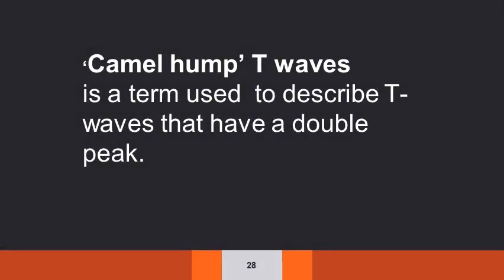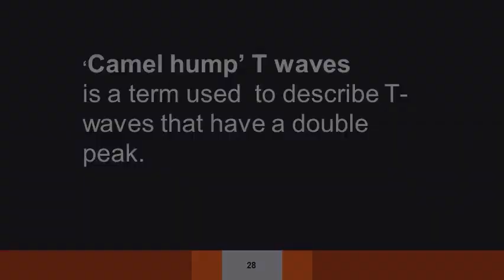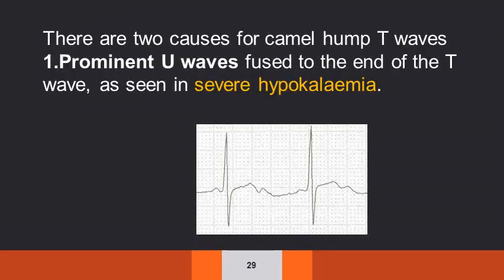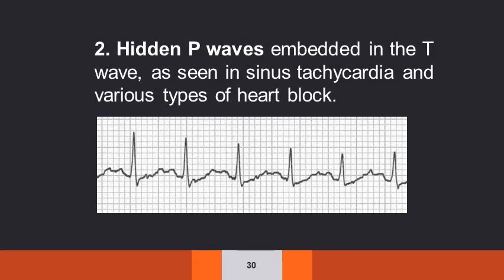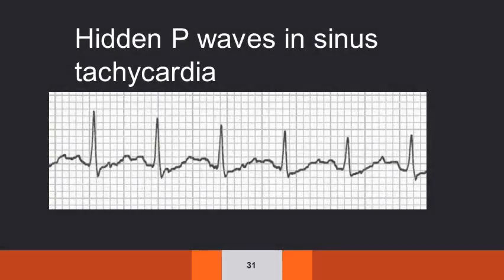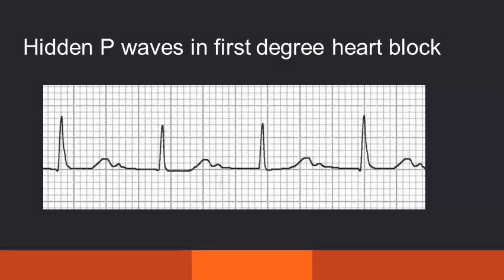Camel hump T waves is a term used to describe T waves that have a double peak. There are two causes: one is prominent U waves fused to the end of the T wave, as seen in severe hypokalemia. The second is hidden P waves embedded in the T wave, as seen in sinus tachycardia and various types of heart block. Here you can see hidden P waves in sinus tachycardia, and hidden P waves in first degree heart block.